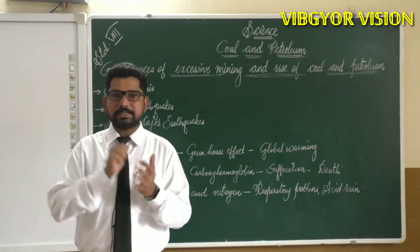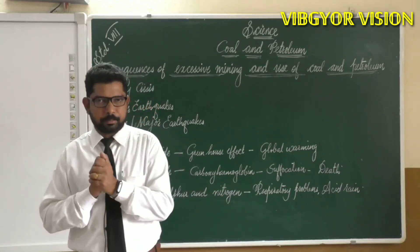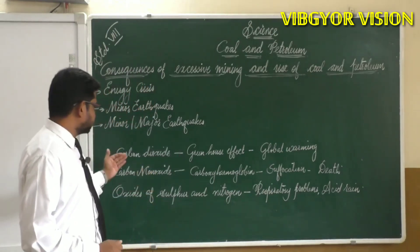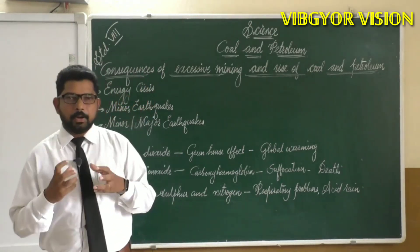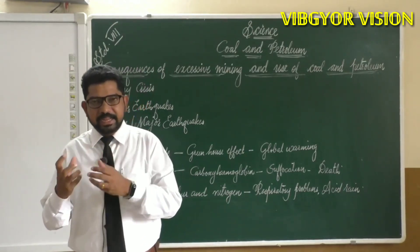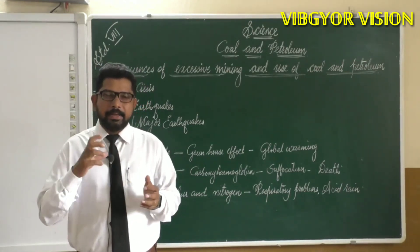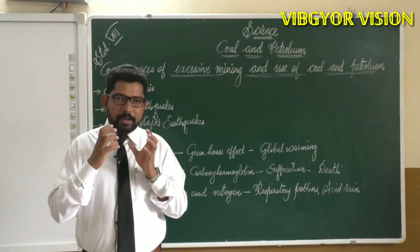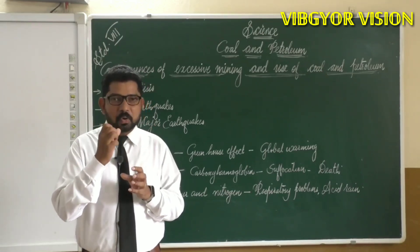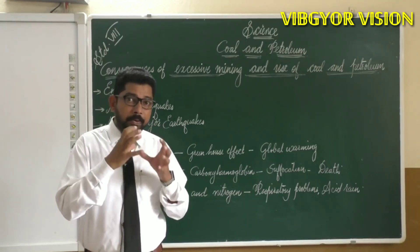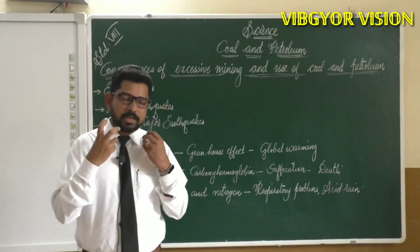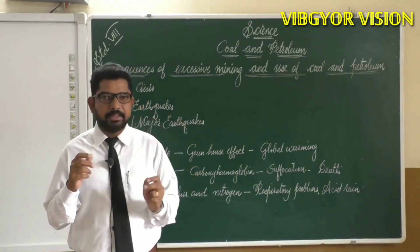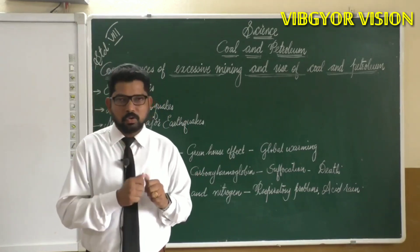Now let's see how these byproducts affect us. First, carbon dioxide: if the amount of carbon dioxide increases in the atmosphere, it directly causes the greenhouse effect. The greenhouse effect is the phenomenon in which infrared rays in solar light are trapped by greenhouse gases. Carbon dioxide is the main greenhouse gas; others include methane and sulfur dioxide.